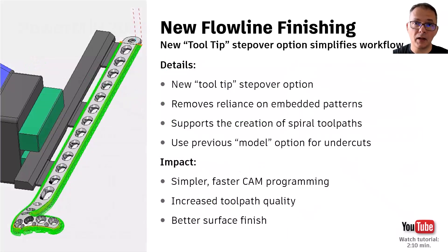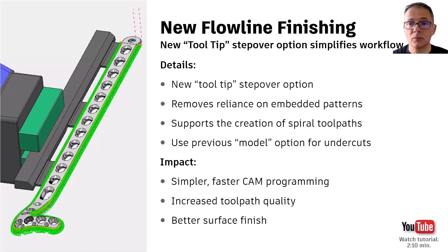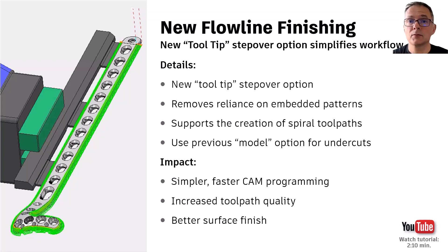Let's start with updates to the existing flowline finishing strategy. A new step over option called tooltip has been introduced that removes the reliance on embedded patterns and can create better quality toolpaths with less likelihood of fragmentation. The new tooltip option calculates step overs based on the position of the tooltip as opposed to the contact point on the tool. This means you no longer need to create embedded patterns, it creates better quality toolpaths, and the tooltip step over option also supports the creation of spiral toolpaths, meaning you can create toolpaths with fewer lead in and lead out moves that can leave witness marks.